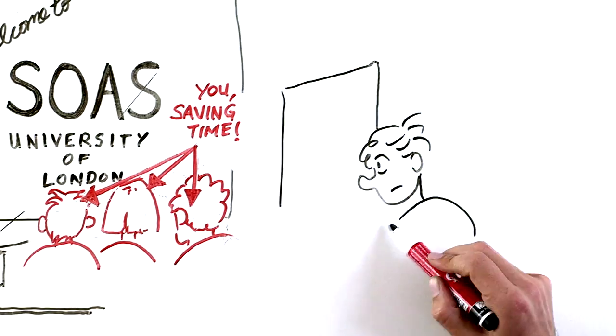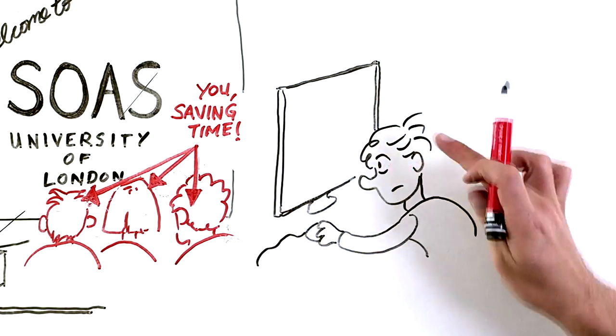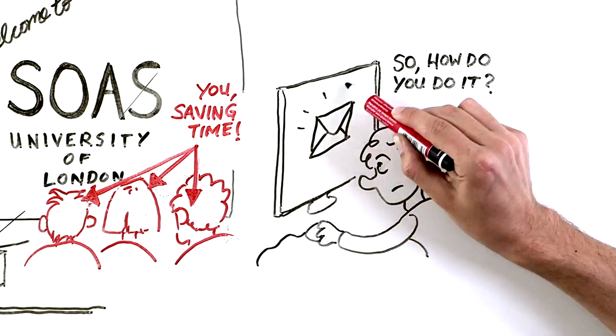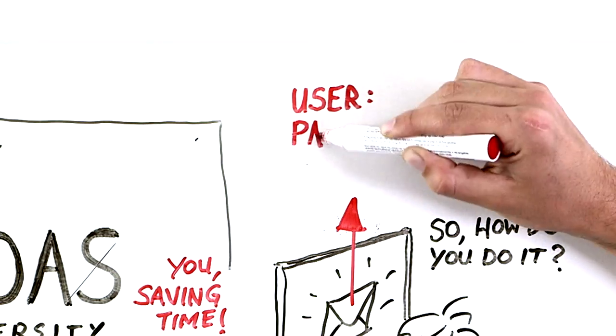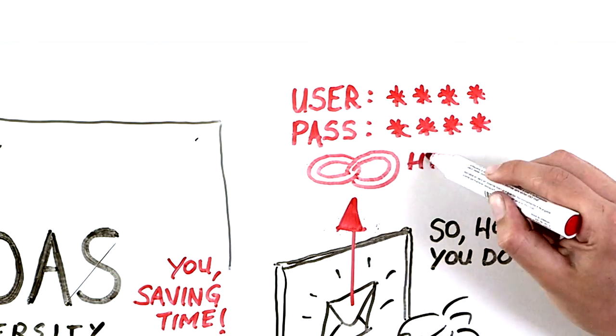Before you arrive at SOAS, you need to complete online registration. So how do you do it? You'll get an email from us when it's time to register. This will include your login details and a link to the online system.